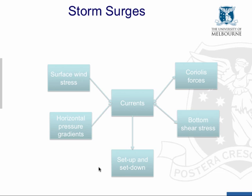All these things — the current produces both set up and set down. Downwind, we get set up, that's an increase in the water level. And upwind, we get set down, which is a decrease in water level. But the key influence is wind during the storm.